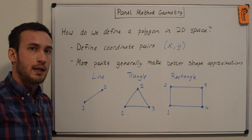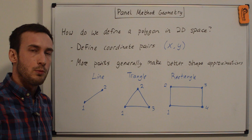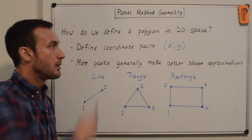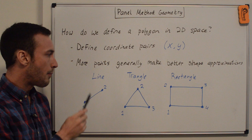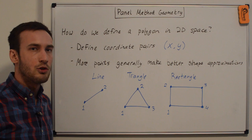So how do we define a polygon in 2D space? If I have a piece of paper and I draw a bunch of points on the paper, then we can associate each point with its x coordinate and its y coordinate — we define coordinate pairs. A line can be fully described by two points, a triangle by three, and a rectangle by four. But if we start getting into more complicated shapes like airfoils, then more points will generally make better shape approximations.